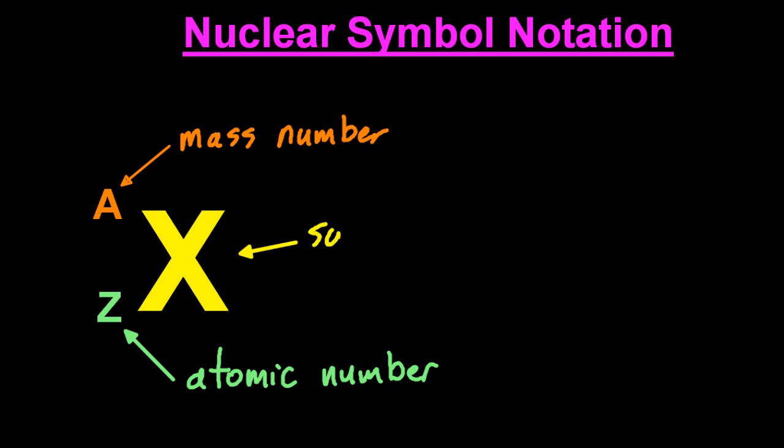The symbol is a capital letter either on its own or followed by one or two lowercase letters. For example, fluorine has a mass number of nineteen and an atomic number of nine.